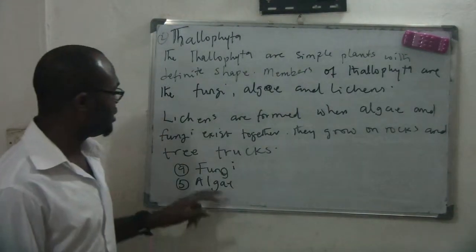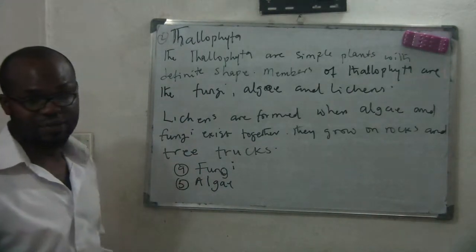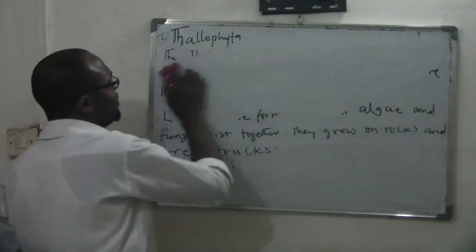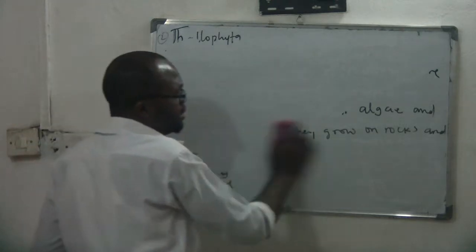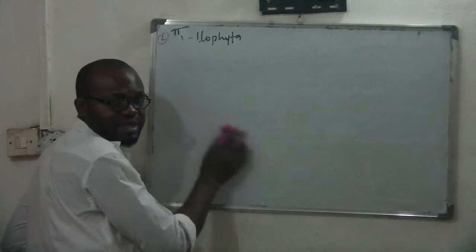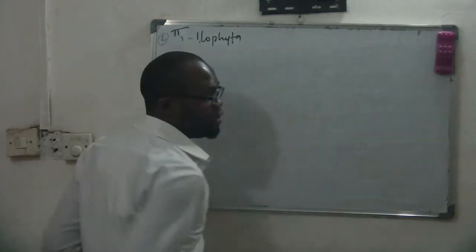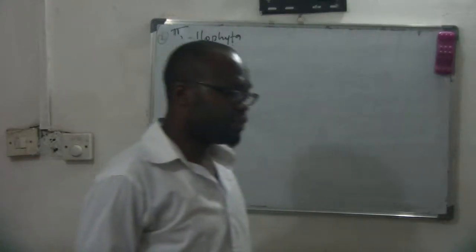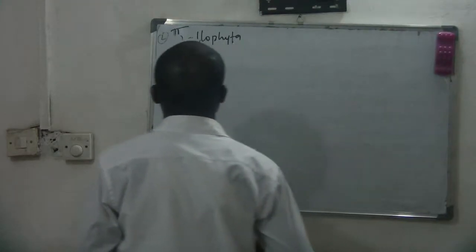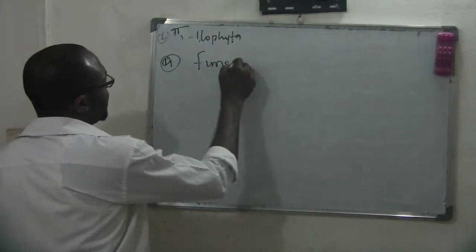We are going to take the characteristics of these two types of Talofaita — the fungi and the algae. In subsequent classes we will be making sketches of all the different kinds of plants. You are supposed to know how to draw them and be able to label them. Number one type, A-type, we'll talk about the fungi.